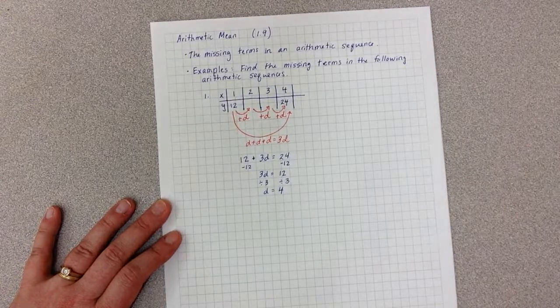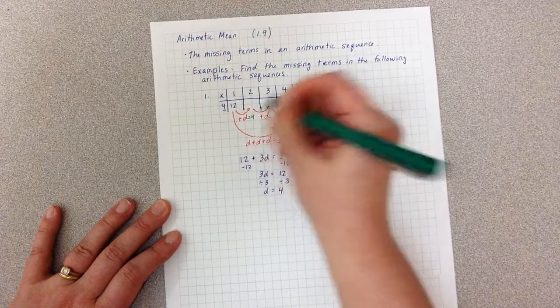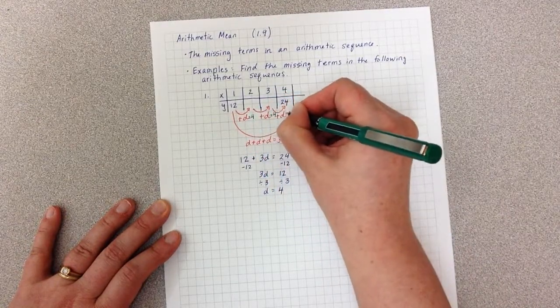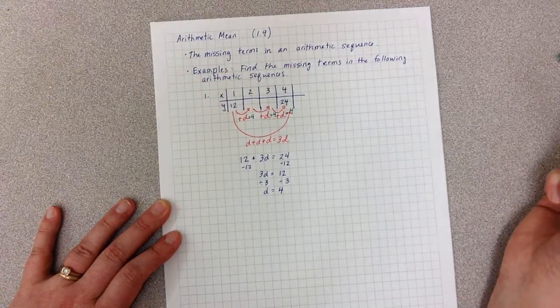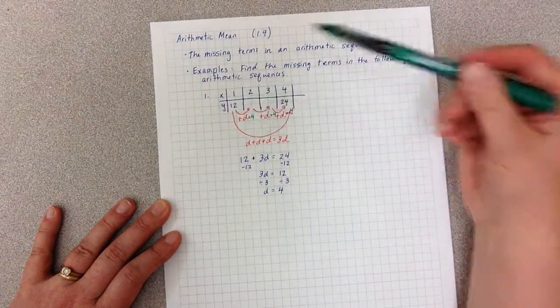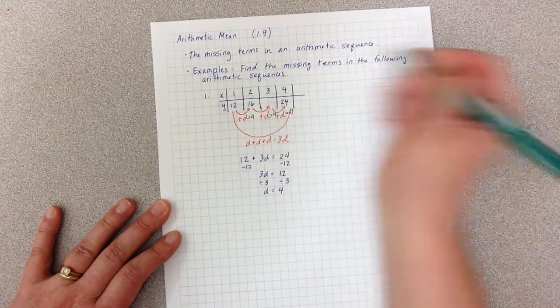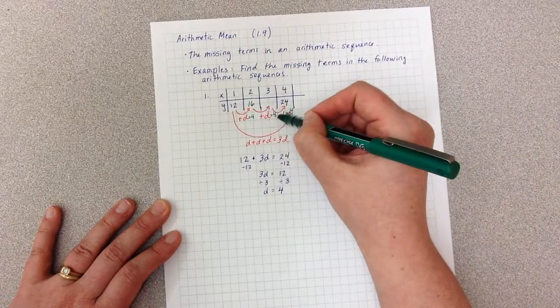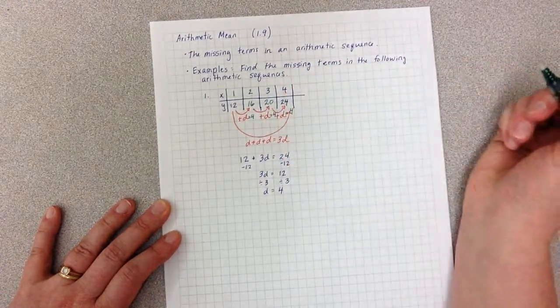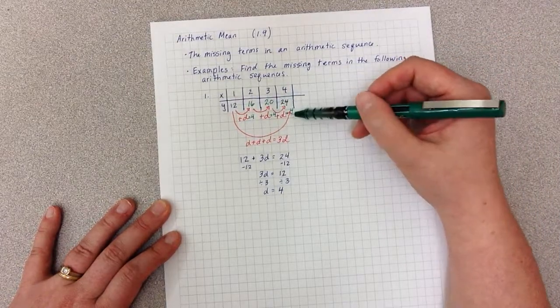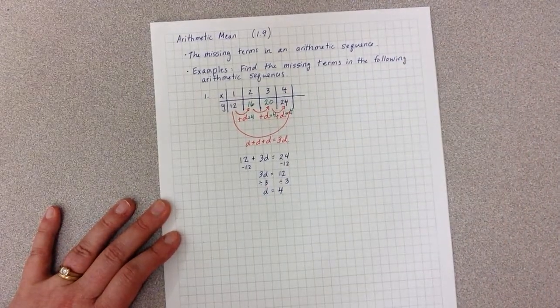Now that I know what D is, I can finish filling in my table by adding 4 each time. 12 plus 4 is 16, 16 plus 4 is 20, and just to double check, 20 plus 4 is indeed 24.